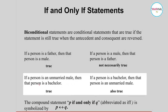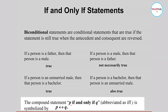Consider: 'if a person is an unmarried male then that person is a bachelor.' When we reverse the antecedent and consequent: 'if a person is a bachelor then that person is an unmarried male' — that is also true. This is an example of a biconditional 'if and only if' statement, because both the original and reversed statements are true.